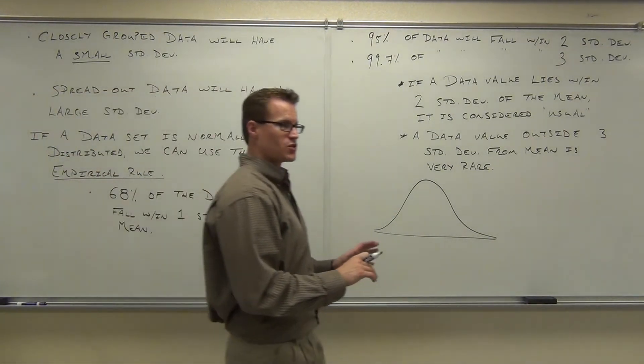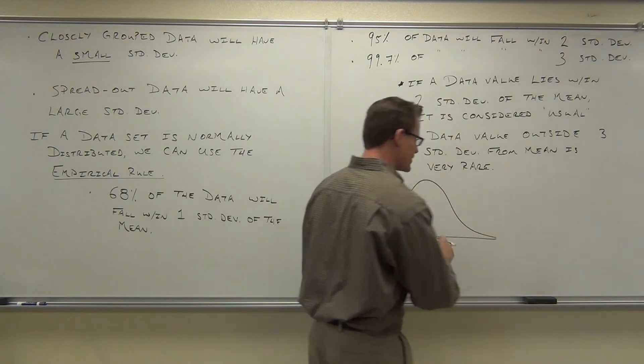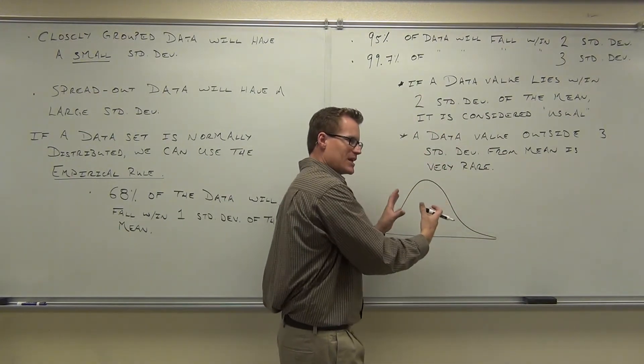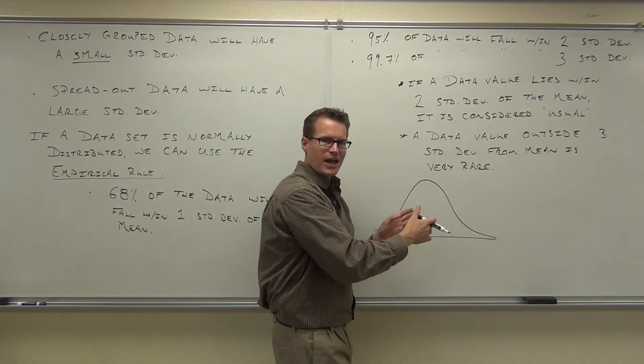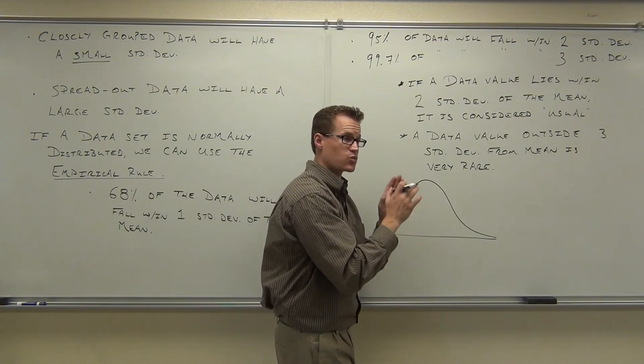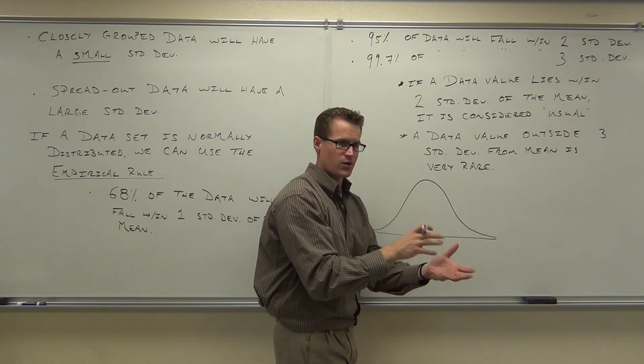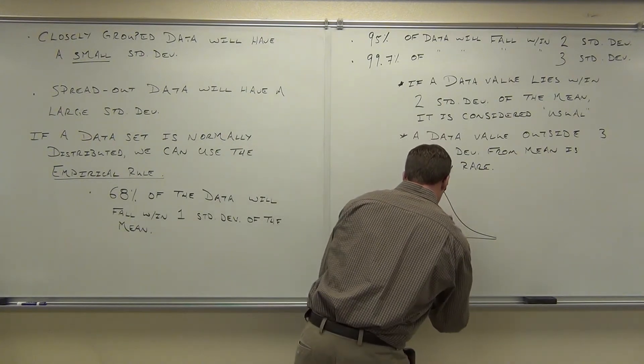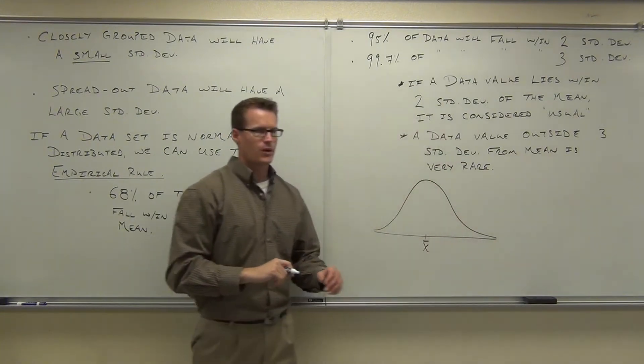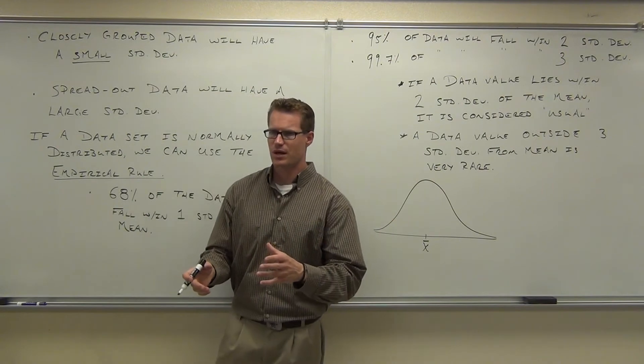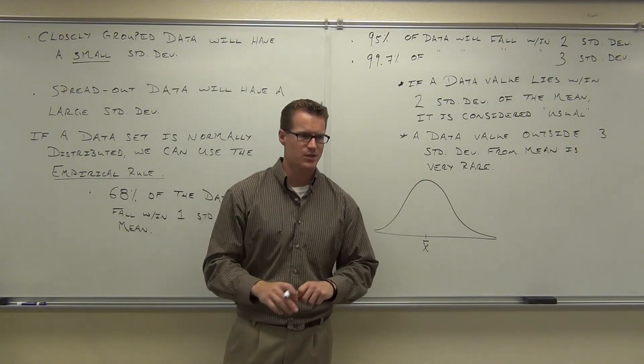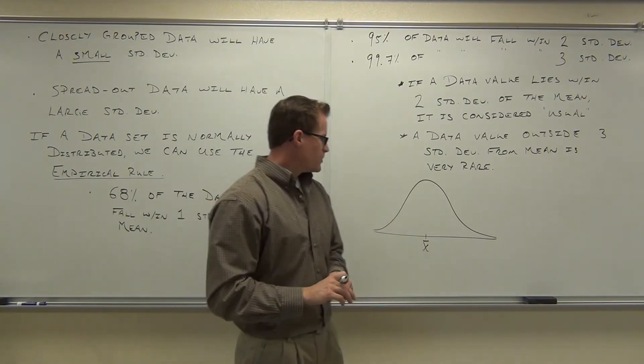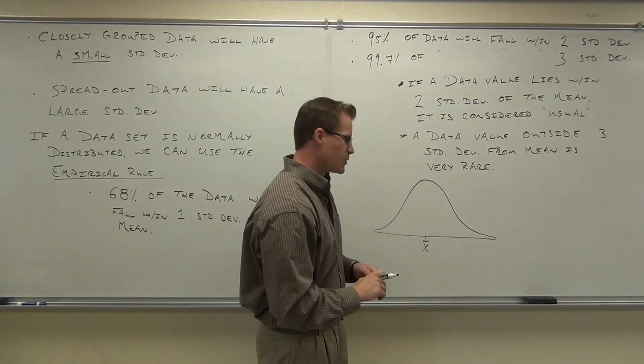Now, on your normal distribution, what's going to happen is, where your mean is, is where most of your data is grouped. And in fact, in a normal distribution, it is right smack dab in the center. That's where your average, your arithmetic mean will be. So, right here, would be your x bar. Or your mu, if you're talking about population. I'm just using x bar, because we've been talking about samples lately.